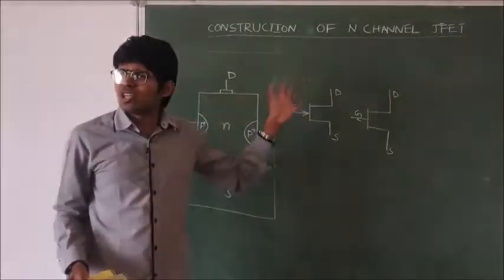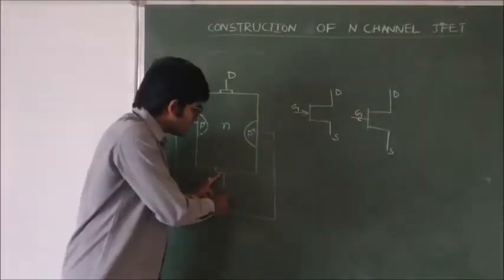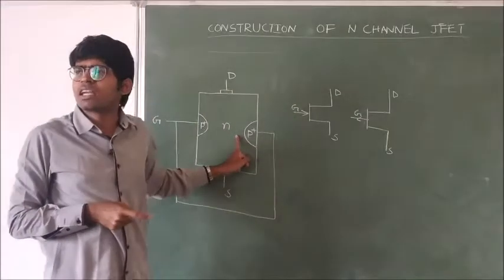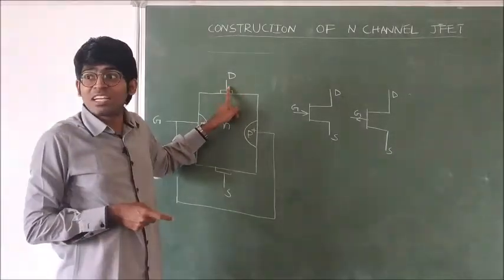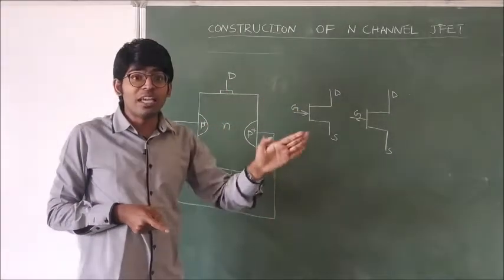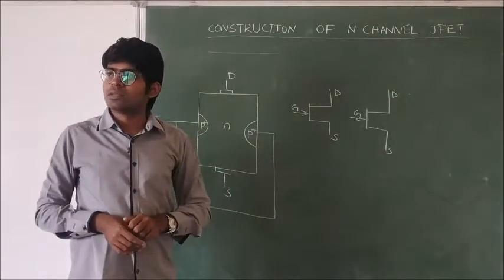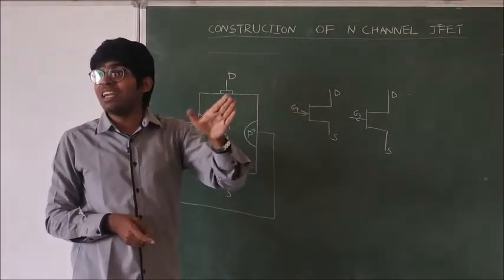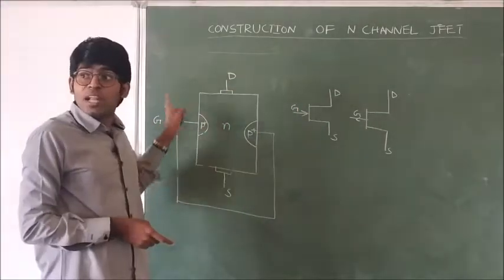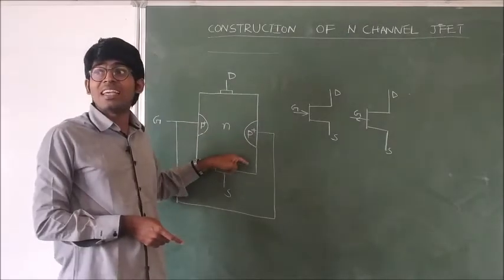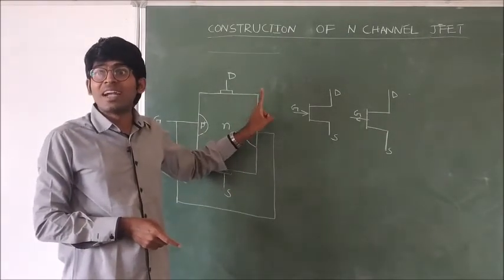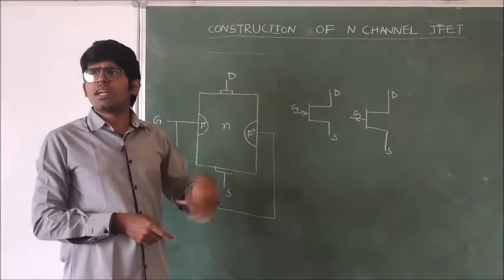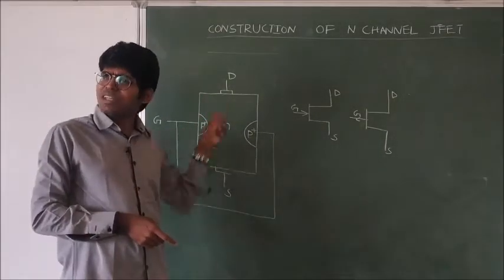Source is the terminal through which the majority carriers enter into the N-type semiconductor bar, and drain is the terminal through which the majority carriers leave the semiconductor bar. Gate is the terminal which controls the majority carrier flow from source to drain — it determines how many majority carriers will flow.